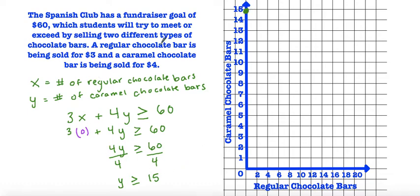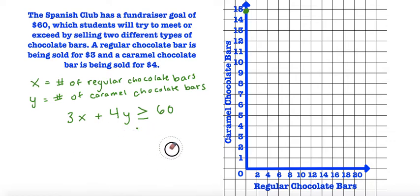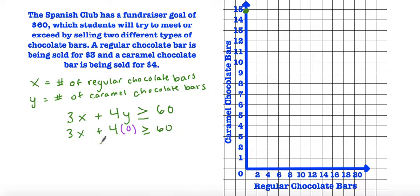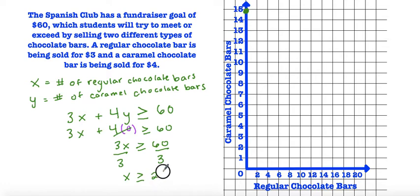Now we substitute y for 0 to get our x-intercept. So we have 3x plus 4 times 0 is greater than or equal to 60. Since 4 times 0 is 0, we have 3x is greater than or equal to 60. Dividing both sides by 3 gives us x is greater than or equal to 20. So our x-intercept is (20, 0). And because we have greater than or equal to, we're going to have a solid line.